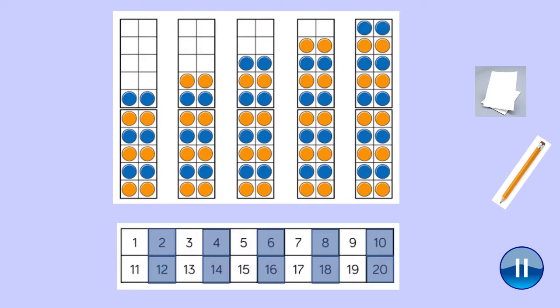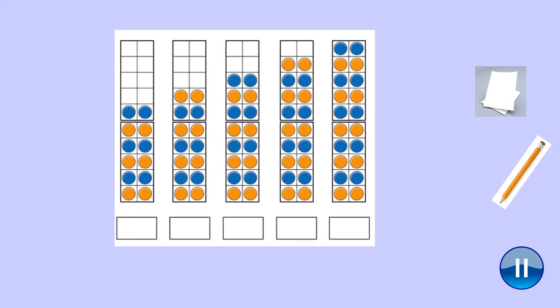Now write the number that is represented by the ten frames in these pictures and we'll go through it on the next slide. Use the number track below to help you if you need to. You can pause the video whenever you need to. You should have written the numbers represented by the ten frames. So you should have written twelve, fourteen, sixteen, eighteen, and twenty. Give yourself a tiny tick for each one that you got correct. Write the number underneath if you made a mistake. Well done for trying.